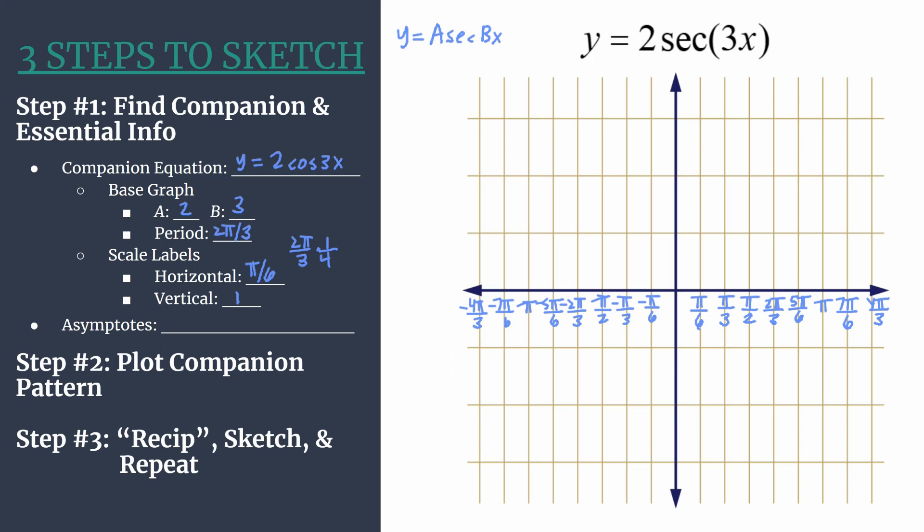Here is the fully labeled horizontal axis. Now let's label our vertical axis just counting by 1: 1, 2, 3 and negative 1, negative 2, negative 3.